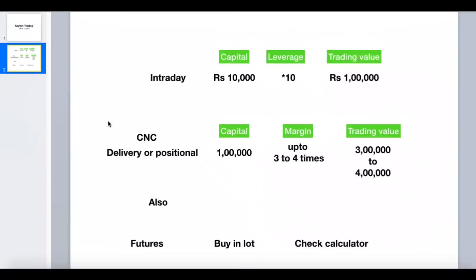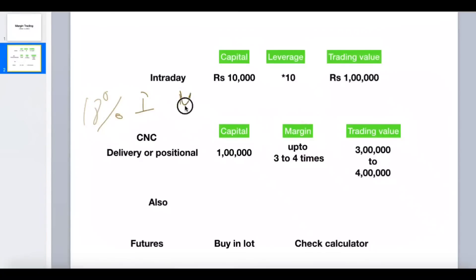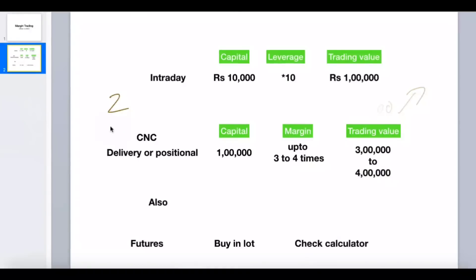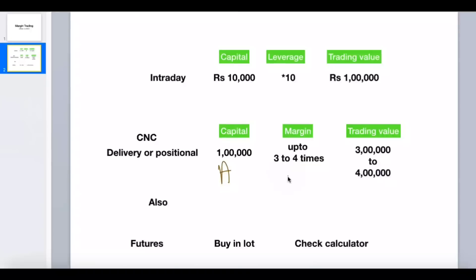Angel Broking charges 18 percent interest per year — just like a loan. For example, if you took 2 lakh extra from them on top of your 1 lakh, making a total of 3 lakh, they will calculate the interest on that 2 lakh. If you hold for 2 days, they divide the annual rate by 365 and multiply by the number of days. I would suggest going to their website — Angel Broking or Upstox — and reading their rules on how many days you can hold, since different brokers have different rules.